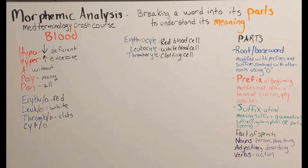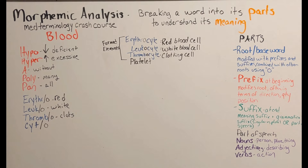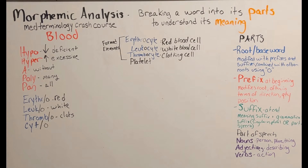Another word for a thrombocyte that is not related to that root is platelet. What do we call red blood cells, white blood cells, and clotting cells as a group? They are called formed elements. The reason is that we can't just call them cells because two of them are not complete cells. Erythrocytes got rid of their nuclei to make room for more hemoglobin — their protein that carries oxygen — and thrombocytes are little cell fragments.